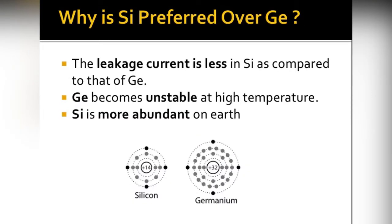Why is silicon preferred over germanium? The leakage current is less in silicon compared to germanium. In silicon it is in nano-amperes, that is 10 to the power of minus 9, while in germanium it is in micro-amperes, that is 10 to the power of minus 6. Comparing the two, the leakage current is significantly less in silicon.